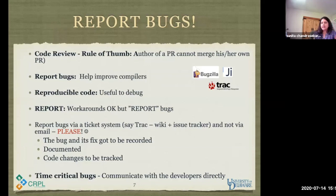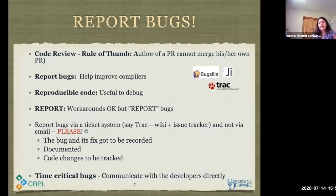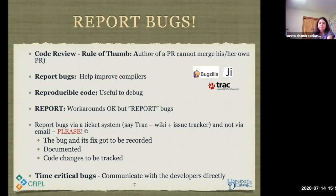Some rule of thumb: the author of a pull request cannot merge their own PR. We have to report bugs — there is no two ways about it. My students tend to create workarounds and are happy with what they've done and move on. But imagine if the bug is not fixed — somebody else will create the same workaround, and another person will create the same workaround. You're basically not fixing the problem. You want to report the bugs, and workarounds are good because the vendor will ask for a case study. Build a small case study to hand off to the vendor, but report the bug via a ticket system. Please don't email bug reports — that's not going to go anywhere. Use conventional trackers. With the CAR project, we typically communicate to developers directly because we have a timeline and deadline.